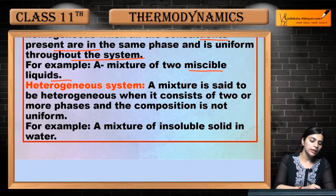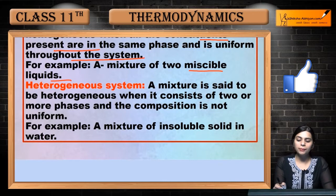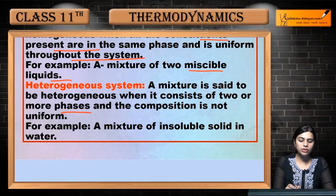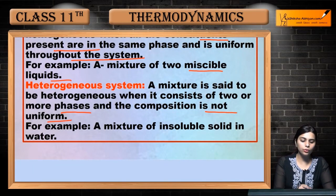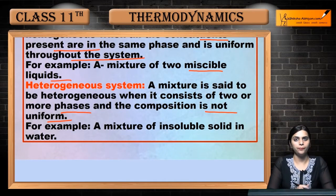Next is heterogeneous system. Hetero — heterogeneous — hi pata lag raha hai cho different. A mixture is said to be heterogeneous when it consists of two or more phases and the composition is not uniform throughout.